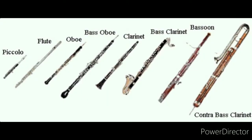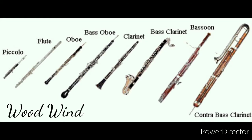Let's now move on to woodwind instruments. This consists of piccolo, flute, oboe, bass oboe, clarinet, bass clarinet, bassoon, and contrabass clarinet.